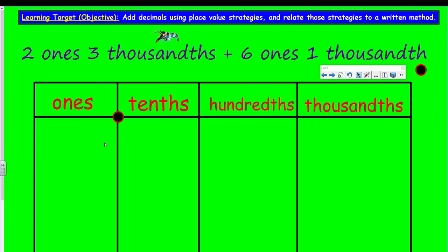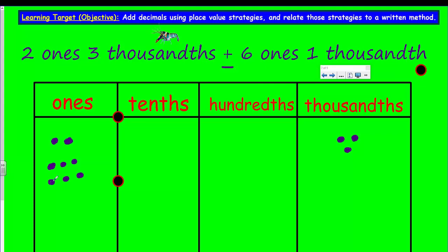First thing I want to do is make sure I get my decimal in the correct place. Anything to the left of the decimal point is a whole number. Anything to the right is smaller than a whole number, and it only gets smaller as you keep moving to the right — whereas moving to the left, you get larger. What we're gonna do is show our problem. I'm gonna go ahead and show my two ones — there's one, and there's two. I'm also gonna show three thousandths.